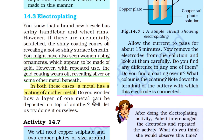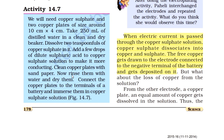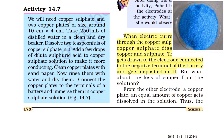You wonder how a layer of one metal can be deposited on top of another? Let's do an activity. We will need copper sulphate and two copper plates of size around 10 cm × 4 cm. Copper sulphate आपको किसी भी chemist की shop पर मिल जाएगा — यह blue color का powder जैसा होता है।